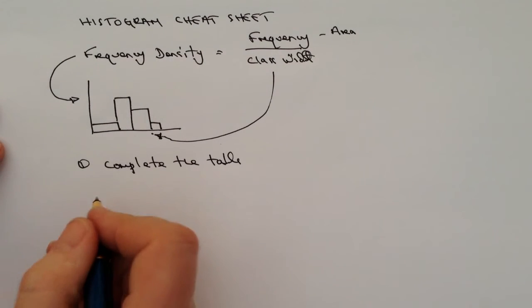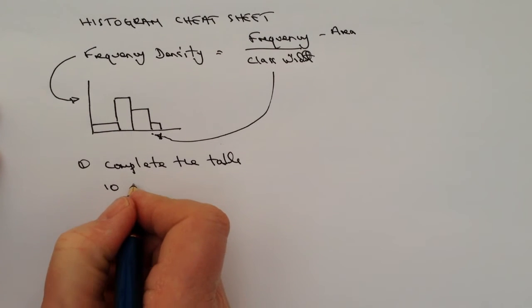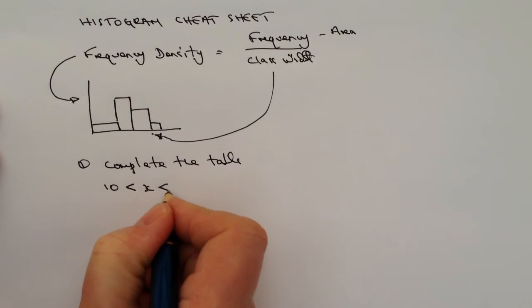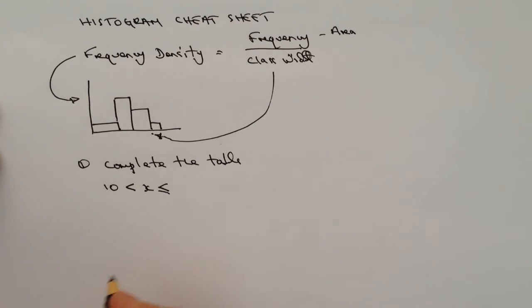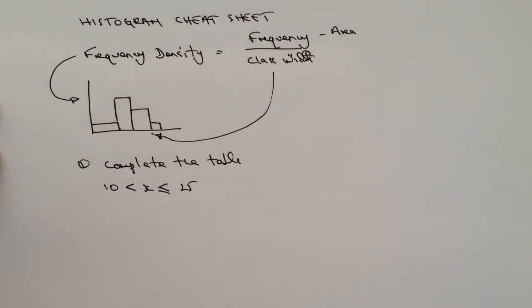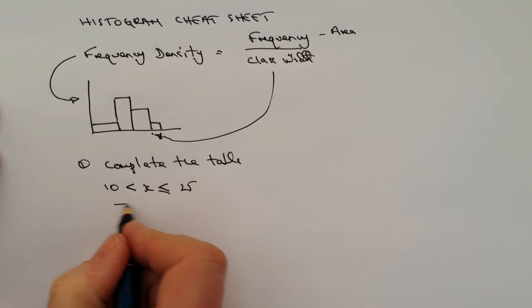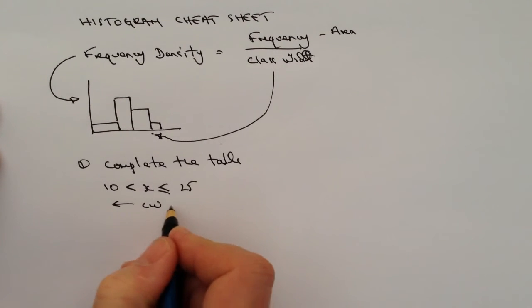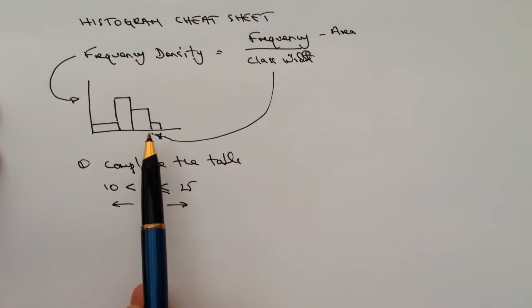Typically, it will give you some information on a class width. So it might say that X is greater than 10 but less than or equal to 25. Well, that's the class width. That's the bit that's represented on this diagram here.